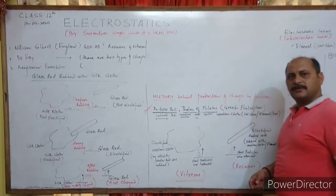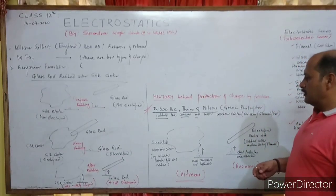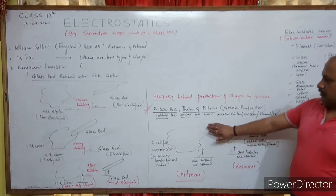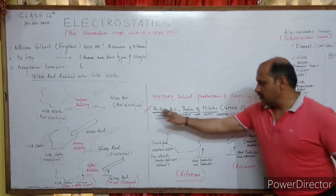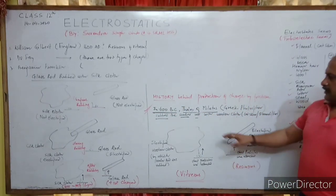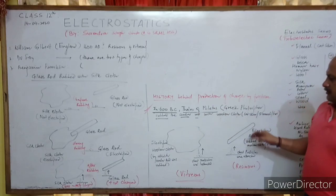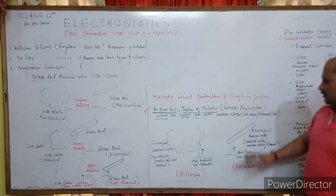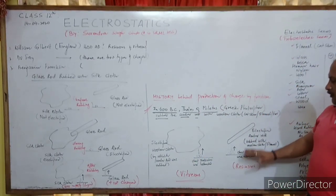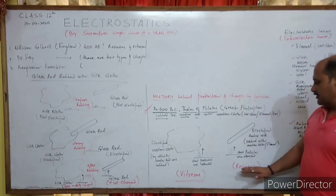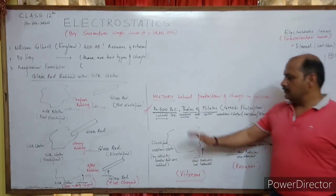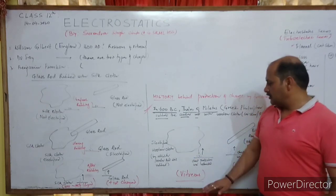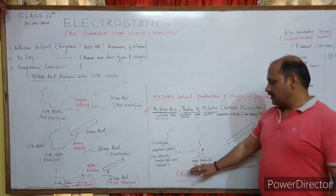Hello my dear students. In the previous lecture, I was here at 600 BC when Thales of Miletus rubbed amber with woolen cloth. Amber acquired the property of attraction, and the woolen cloth also got electrified and started attracting small particles.